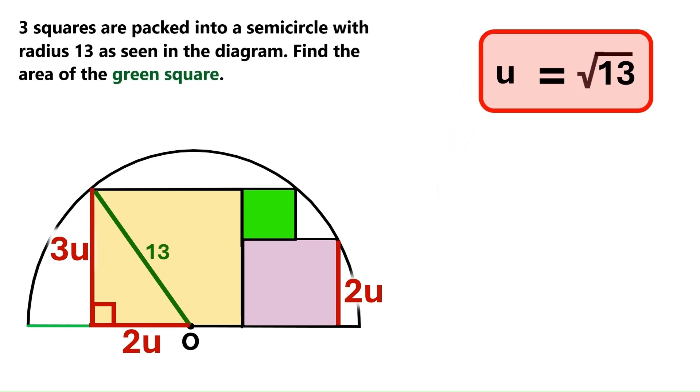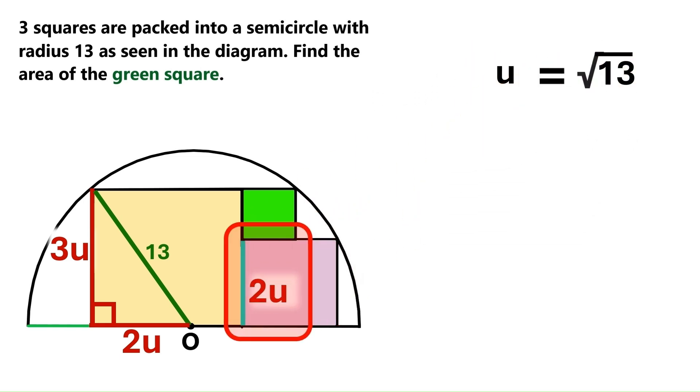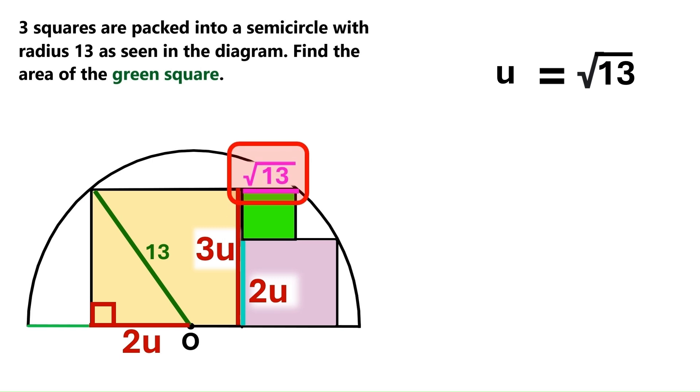We're so close to finding the green square's area. We know this side is 2u and this side is 3u. So this segment here, which is the side of the green square, must be 1u. And we know that u is radical 13.